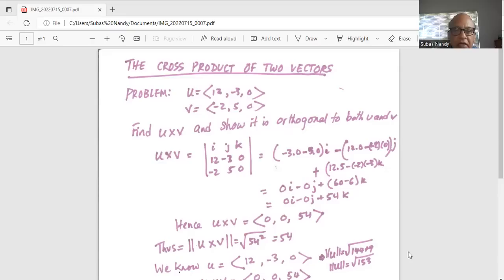And then to find the coefficients of k, we eliminate the first row and the third column, we are left with 12 times 5, 60. And then there are two minuses, so it is 12 times 5, 60, minus 6.